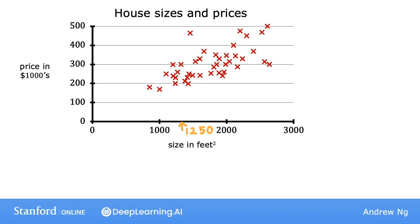One thing you could do is you can build a linear regression model from this dataset. Your model will fit a straight line to the data, which might look like this. And based on this straight line fit to the data, you can see that if a house is 1,250 square feet, it will intersect the best fit line over here. And if you trace that to the vertical axis on the left, you can see the price is maybe around here, say about $220,000.